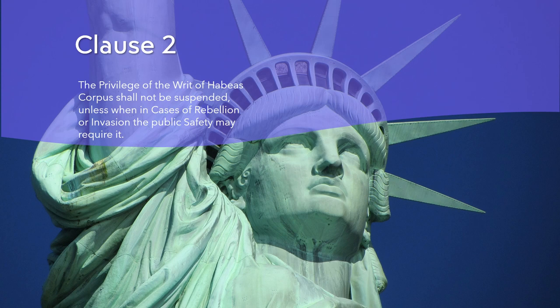The Writ of Habeas Corpus is one of the oldest and most fundamental rights in Anglo-American legal tradition. It dates back to the Magna Carta of 1215, which was a document that limited the power of the English king and guaranteed certain rights to his subjects. The Writ of Habeas Corpus was seen as a safeguard against tyranny and oppression, as it prevented the king from locking up his enemies without a fair trial. The framers of the U.S. Constitution included this clause to ensure that the federal government would respect this right and not abuse its power over the people.